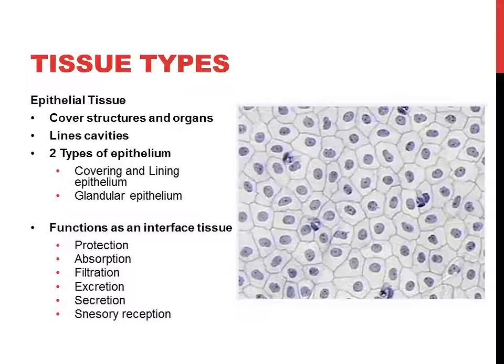Epithelial tissue also excretes and secretes substances since it composes glands, and it serves sensory roles in the skin. So epithelial tissue does many things, but in all of its functions it's really an interface tissue — an interface between the body and the outside of the body.